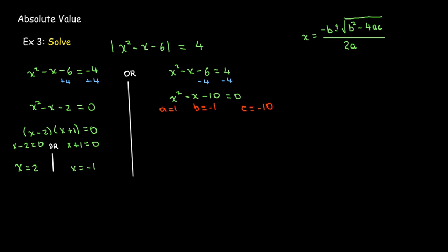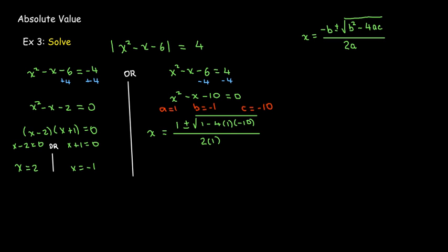My a value is 1, b is negative 1, and c is negative 10. So be careful with those negative signs. Substitute into the formula. Work that out carefully. And I get x equals 1 plus or minus square root 41 all over 2.